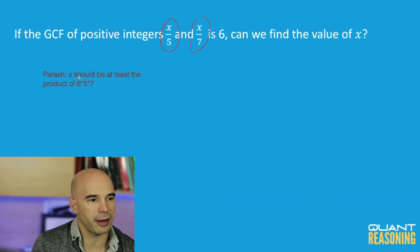So JD is exactly right. You can take what Parash said. Parash isn't technically wrong, right? Parash said x should be at least the product of 6 times 5 times 7. We can remove the words at least and say x should be the product of 6 times 5 times 7. So can we find the value of x? The answer is yes, we can.